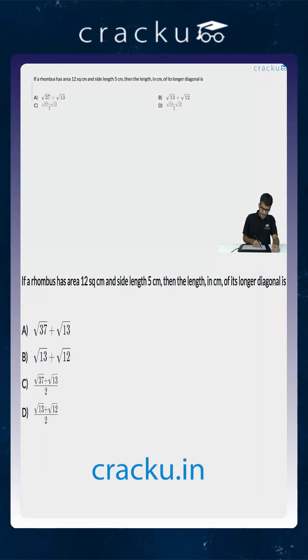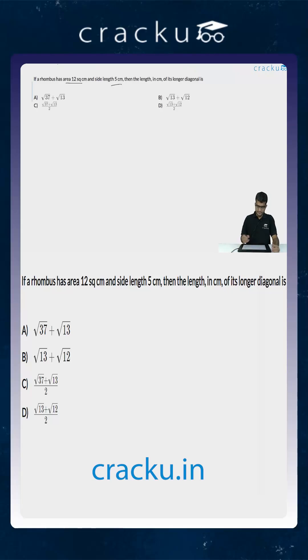In this question, we are told that a rhombus has an area of 12 square centimetres and a side length of 5 centimetres. We are asked to calculate the length in centimetres of its longer diagonal.